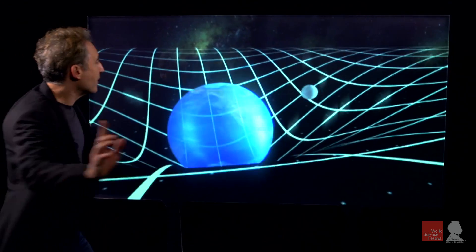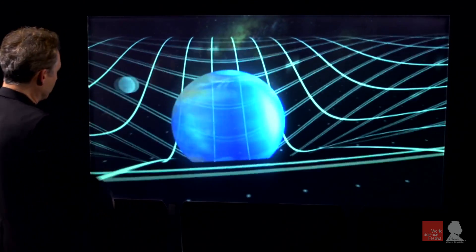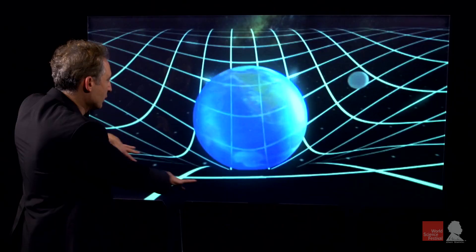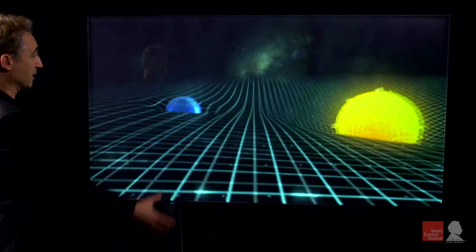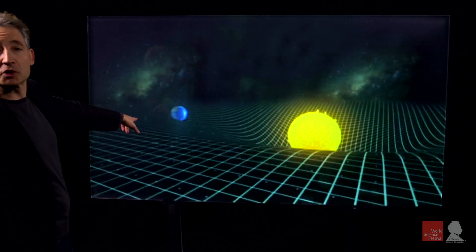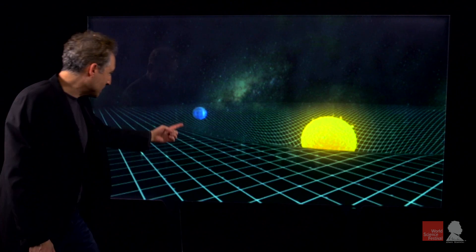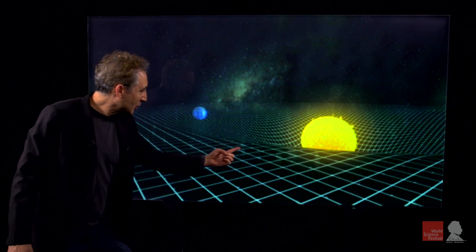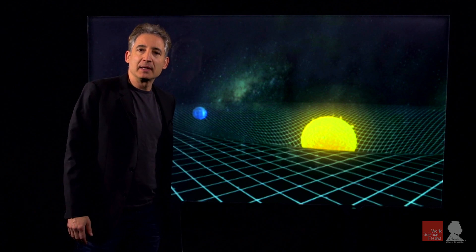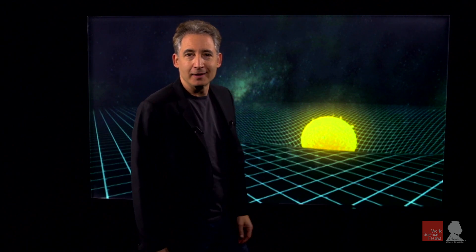Einstein is saying that the moon is kept in orbit because it's rolling along a valley in the curved environment that the earth creates. And if you pull back and you look at the motion of the earth, it is kept in orbit for exactly the same reason. The earth rolling along a valley in the warped environment that the sun creates.